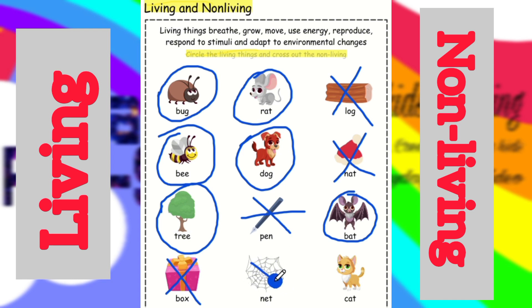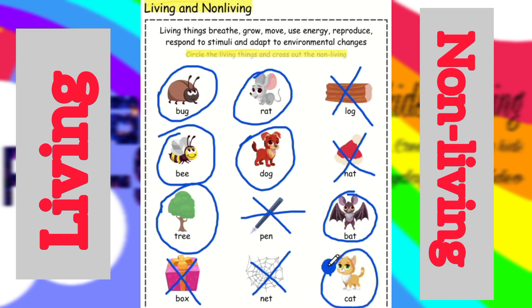Next is net — it is also a non-living thing; it can't breathe or move. Cat is a living thing — it can move and breathe. Circle the cat. Thank you for watching — please like, share, and subscribe.